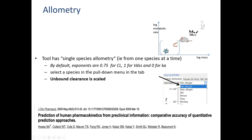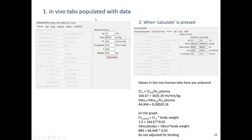By default when you use one of the CSV parameter files provided, the exponents are 0.75 for clearance — you can change that if you want. You can also decide which species to use as the basis for the allometry. Again, it's the unbound clearance that's scaled.